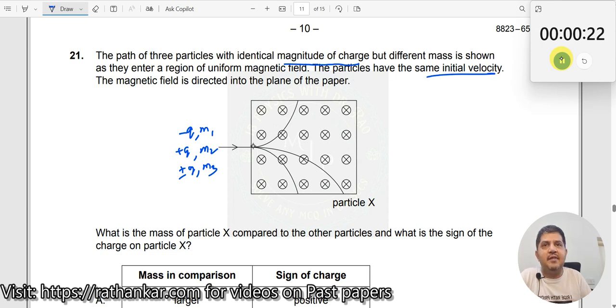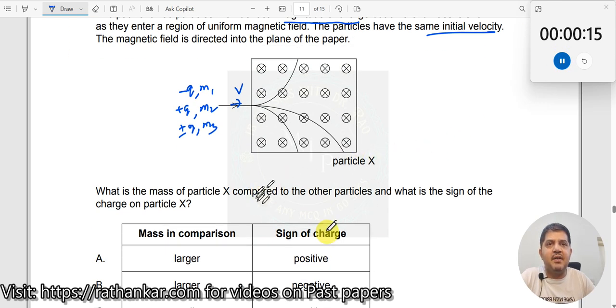All of them have the same initial velocity. Everything has the same initial velocity. Magnetic field is directed into the plane of the paper. Now, what is the mass of the particle X compared to the other particles? What is the sign of the charge?